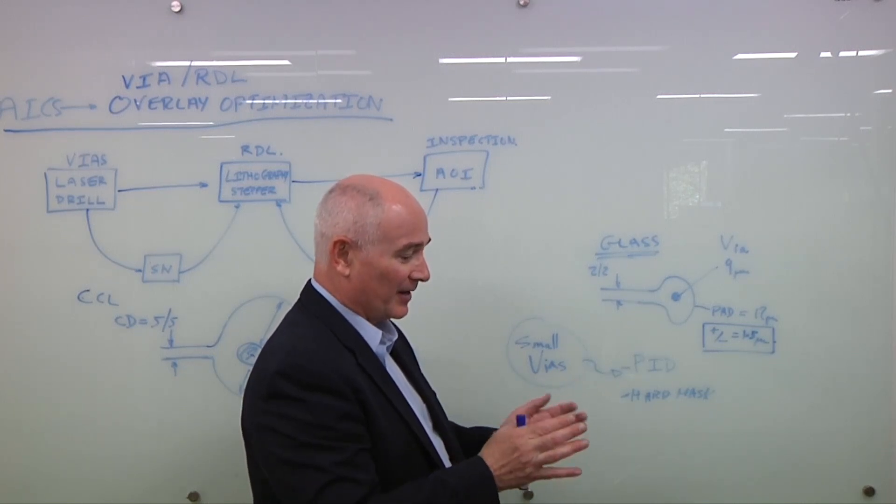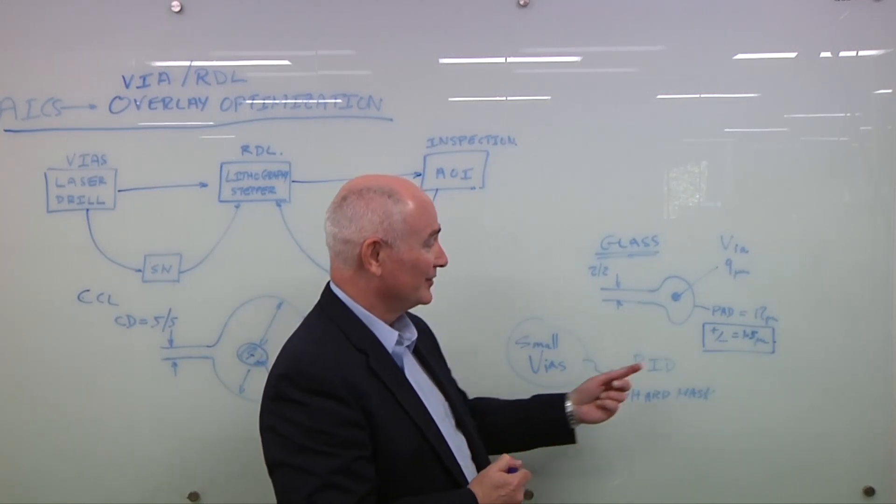And of course, now you have a tolerance of 1.5 micron overlay. So you've got better compression of all your RDL structures into a very high, fine-resolution layout. But of course, now you need to have better overlay.